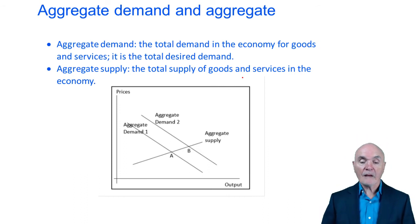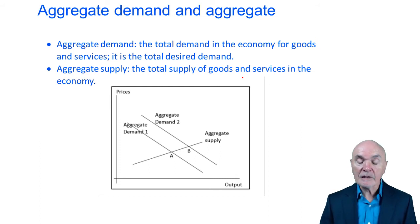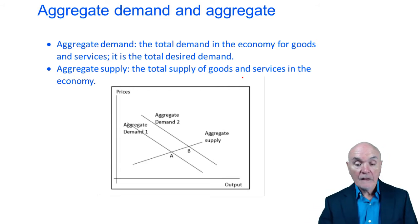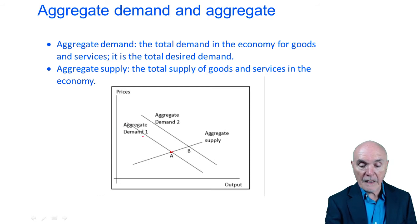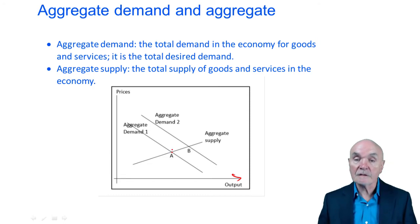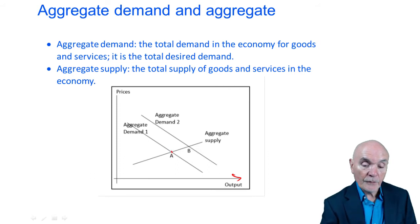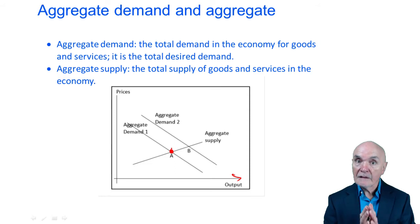Aggregate demand and aggregate supply — aggregate demand is total demand in the economy for goods; think of it as a kind of measure of national income. Aggregate supply is the total supply of goods and services in the economy. These should match. So here we have an equilibrium point where the price of the goods has fallen, so aggregate demand is growing along this axis. As the price of goods falls people will buy more goods, and as the price of goods rises, factories and producers will be motivated to produce more goods. At some point you have an equilibrium in the economy where the goods produced precisely match the goods which are demanded at a certain price.